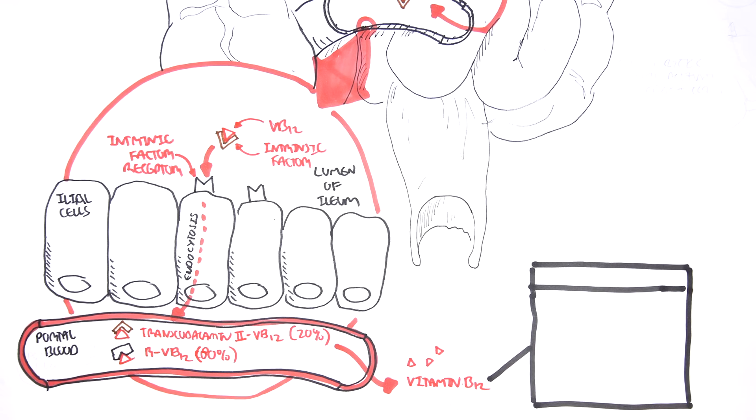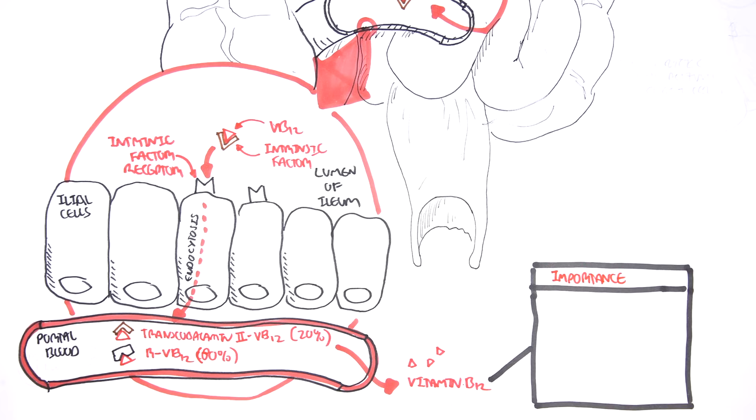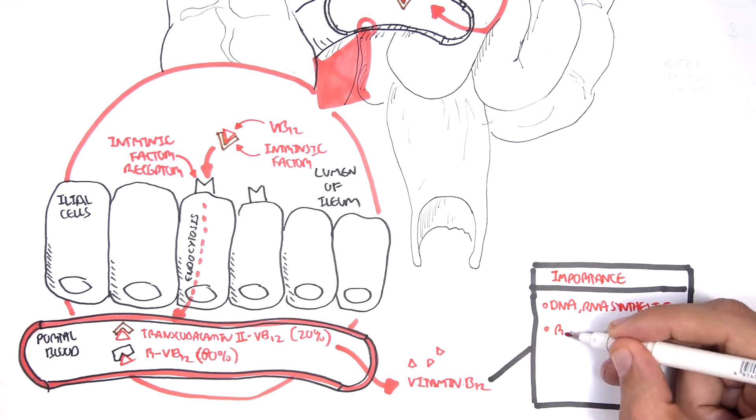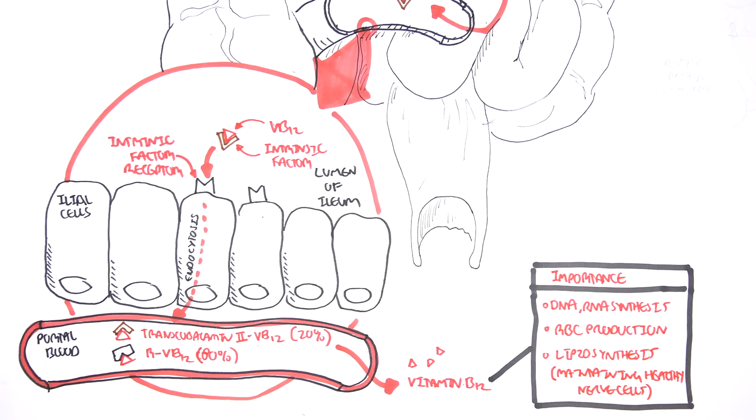The vitamin B12 is important for DNA and RNA synthesis, red blood cell production, as well as lipid synthesis, which is important for maintaining healthy nerve cells. Because by lipids, I mean myelin sheath, which are on your nerve cells.